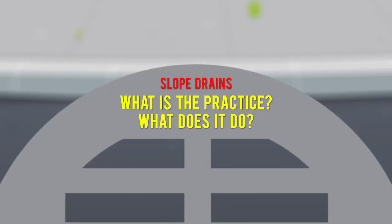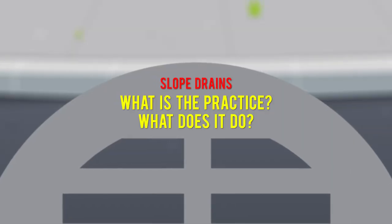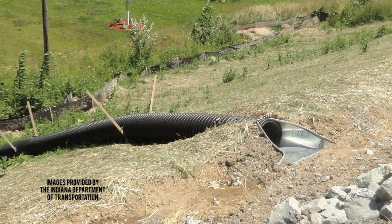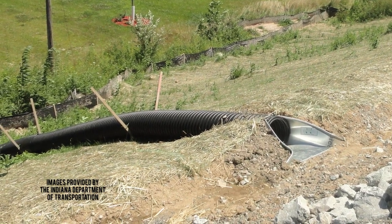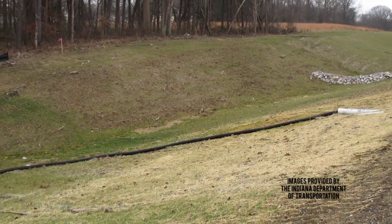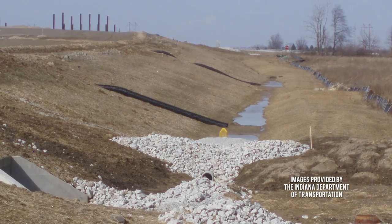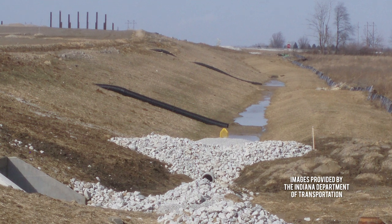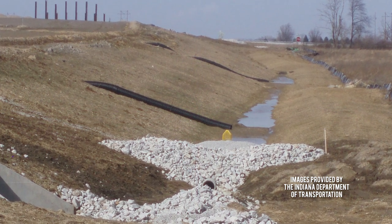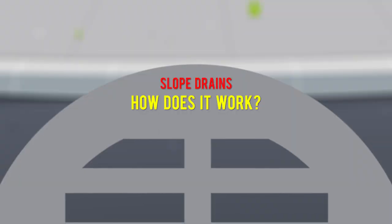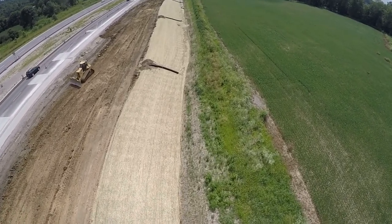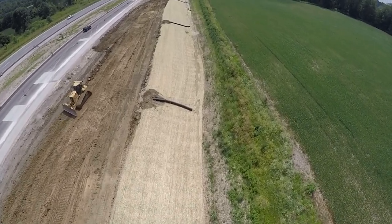Slope drains. A temporary slope drain is a temporary storm water control measure consisting of flexible or rigid tubing or conduit placed and anchored on an unvegetated slope to convey storm water runoff from the top of the slope to the bottom of the slope without causing erosion of the slope surface. It temporarily conveys storm water runoff down the face of a slope without causing erosion.